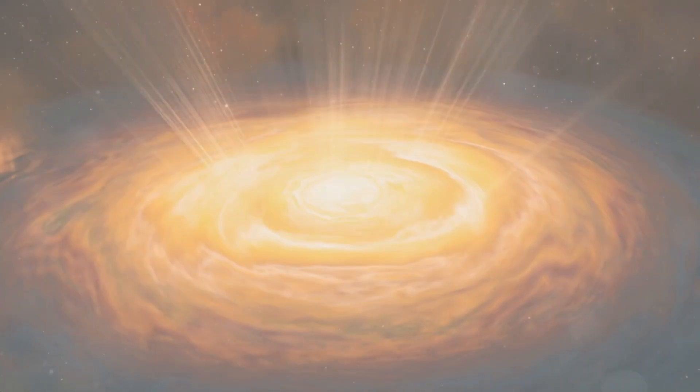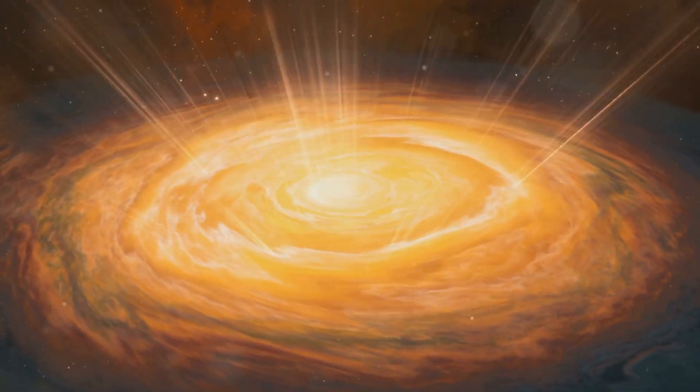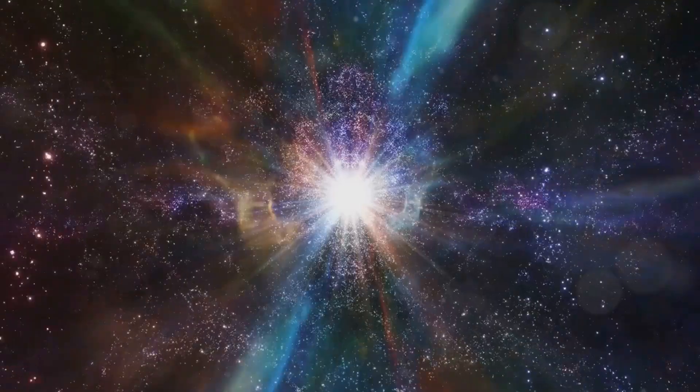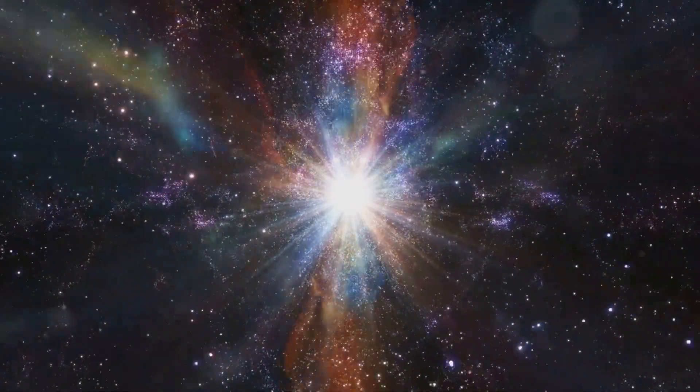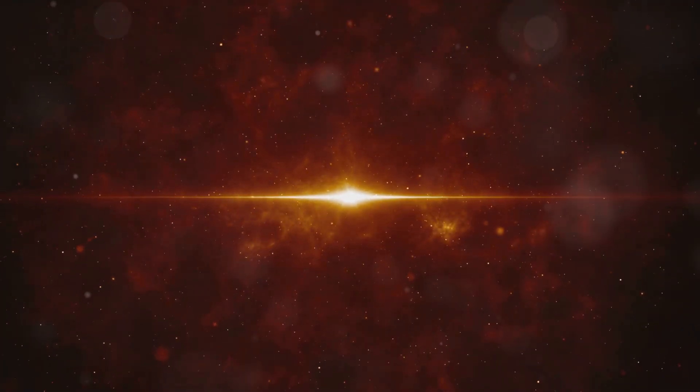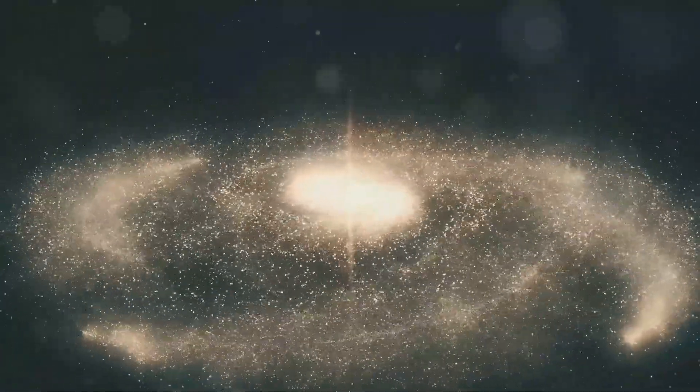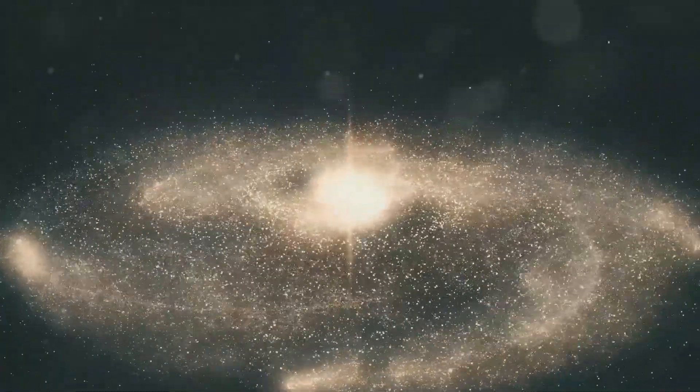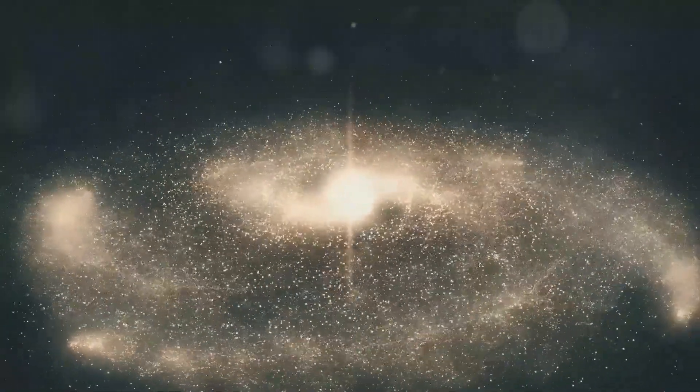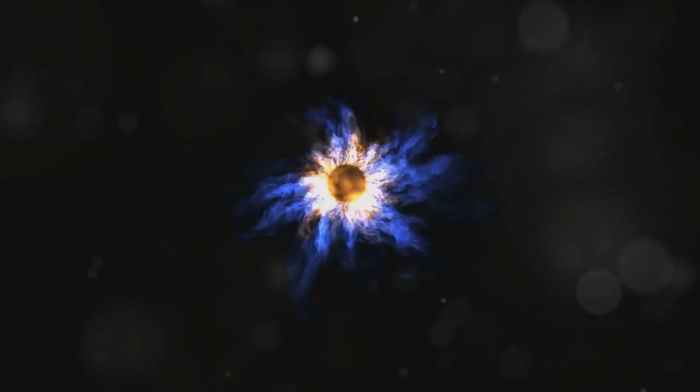On March 19, 2008, astronomers observed the brightest GRB ever recorded. It was named GRB 080319B. For about 30 seconds, this burst was visible to the naked eye. It was like a new star appearing in the sky. Luckily, this GRB happened about 7.5 billion light years away. That's incredibly far, but it shows us just how powerful these events can be.